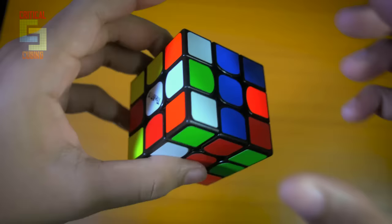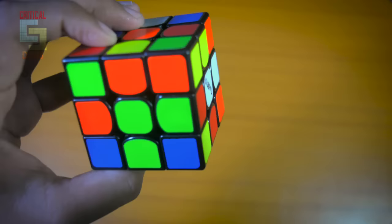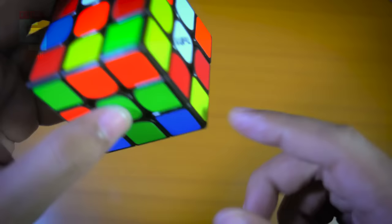The last edge for your cross is this green and white one, and this can also be placed down in one move by doing an L2 like this. So the cross is pretty easy on this one.